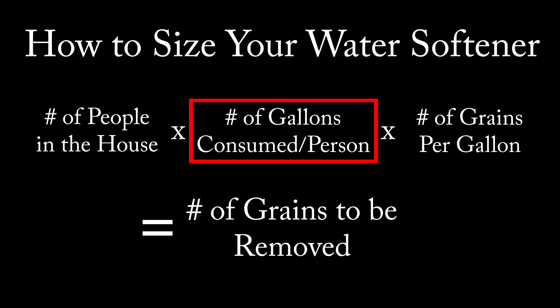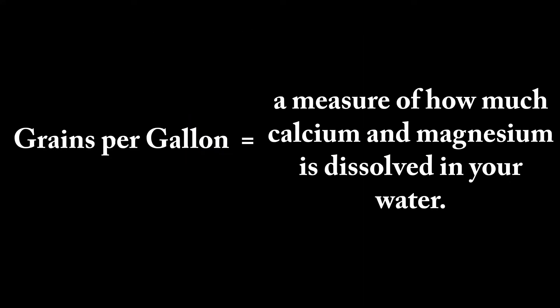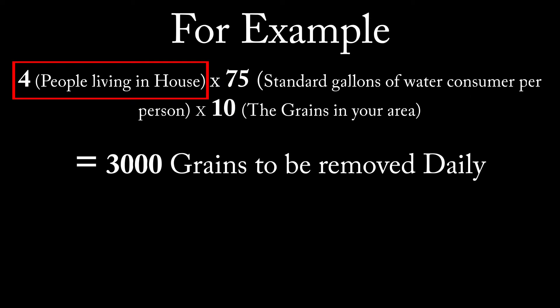For the number of gallons consumed per person, you can use 75 gallons, which is the national average. And for grains per gallon, you can call your municipality if you use city water, or purchase a water test kit if you use well water. Grains per gallon is a measure of how much calcium and magnesium is dissolved in your water.